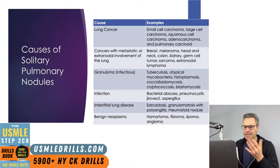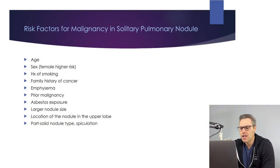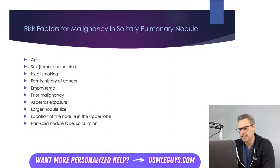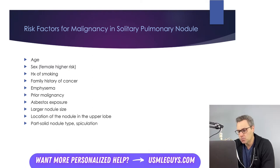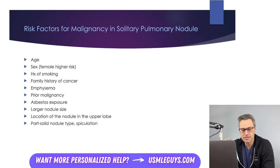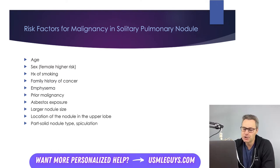We also have benign neoplasms like hematomas or fibromas. Now, the risk factors that increase the likelihood that a solitary pulmonary nodule is cancerous include age — from ages 35 to 39, only 3% are malignant; between 50 and 59, that jumps to 43%; and for those 60 and above, more than 50% will be malignant. Female patients and those with a smoking history are at greater risk, as are those with a family or personal history of malignancy, a diagnosis of emphysema, or asbestos exposure. Larger nodules in the upper lobes or those that are part-solid or spiculated are more likely to be malignant.